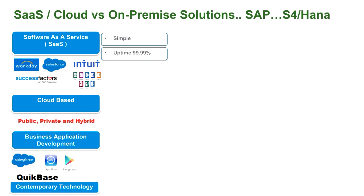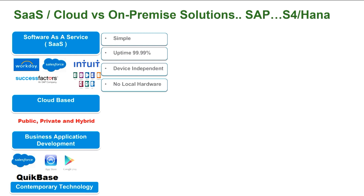In summary, software as a service is a kind of contemporary technology, and most companies are going towards taking a particular business process as part of their SaaS business solution rather than having their own development activity. These applications promise SLA of 99.99% of the time. They are device-independent, meaning they are available anywhere — whether on a laptop or mobile application, whether Apple or Google-based products. You don't need local hardware, and your upfront investment will be low. Applications like Workday, Salesforce.com, and Success Factors offer very frequent upgrades — even weekly upgrades are planned for some.